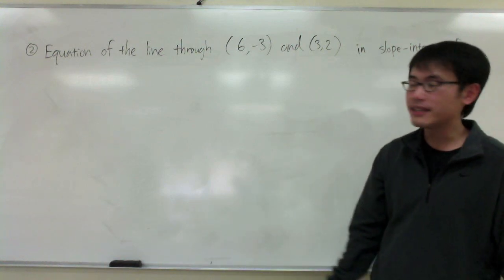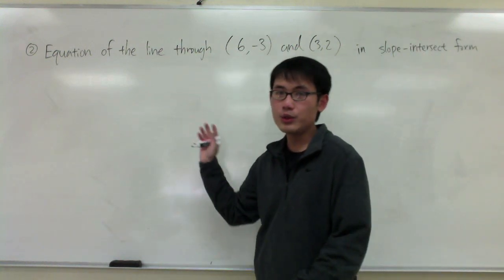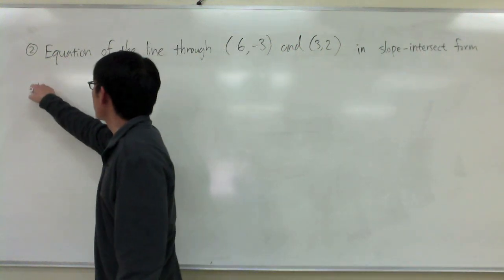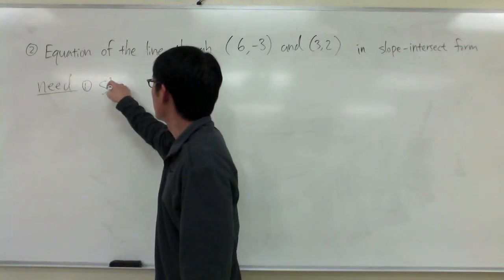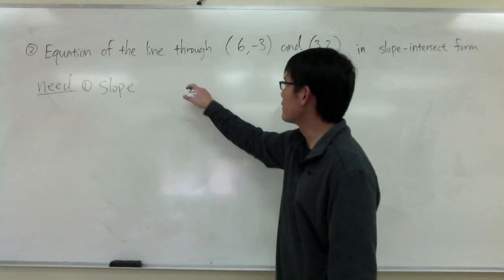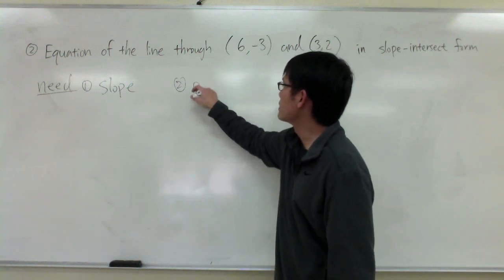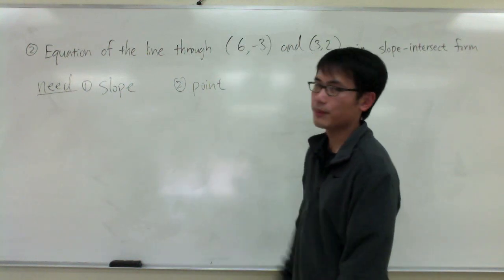Whenever we are trying to write the equation of a line, we need two things. First of all, we need to know what the slope is. That's the first thing that we get. And then second of all, we need to pick a point.